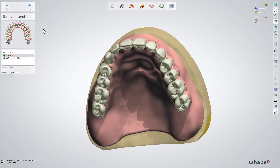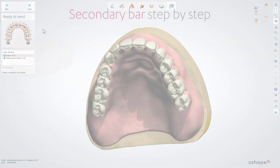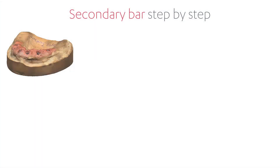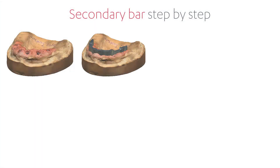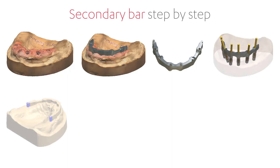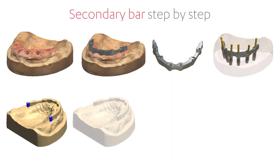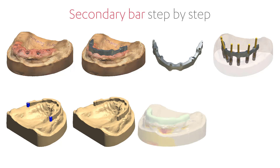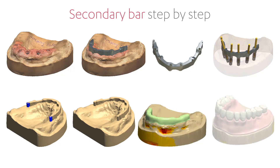Save and send the designs for manufacturing. With the possibility to design secondary bars, you can create different types of restorations — our example is just one of those possibilities. You have now learned how to design the secondary bar. We hope this was helpful, and thank you for watching.